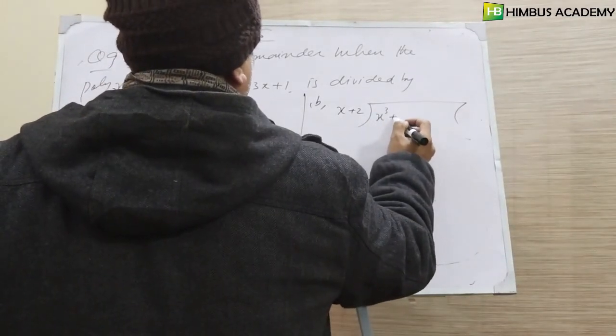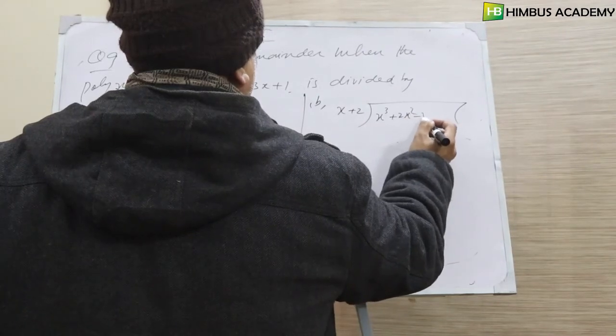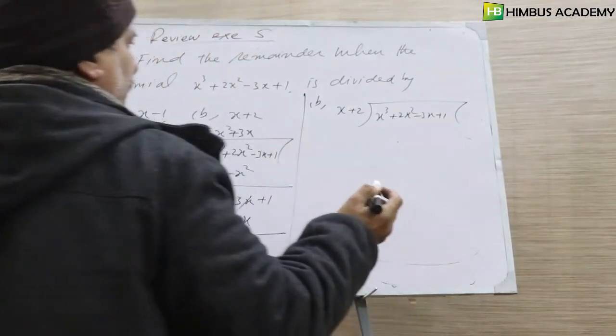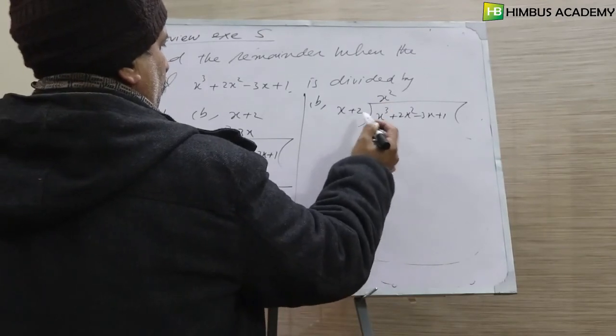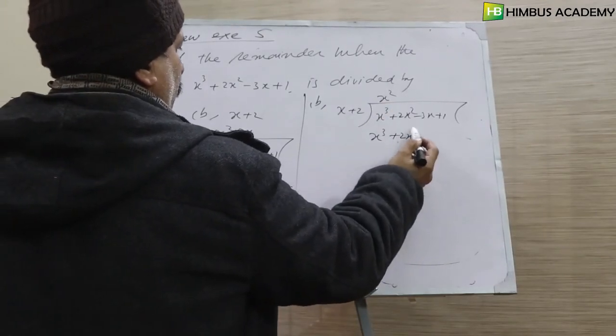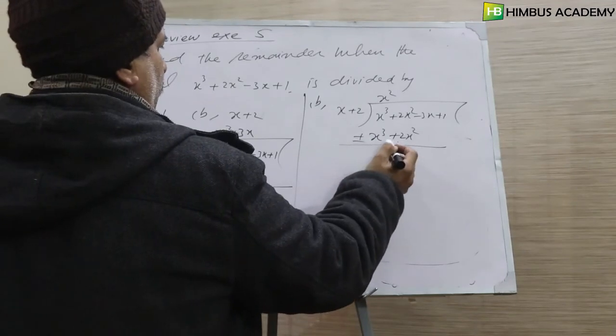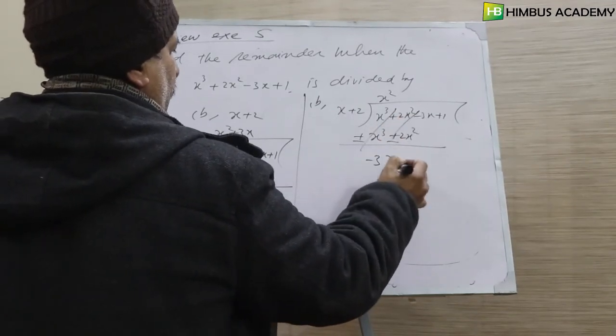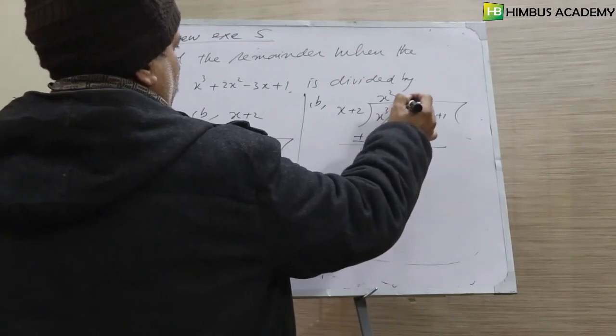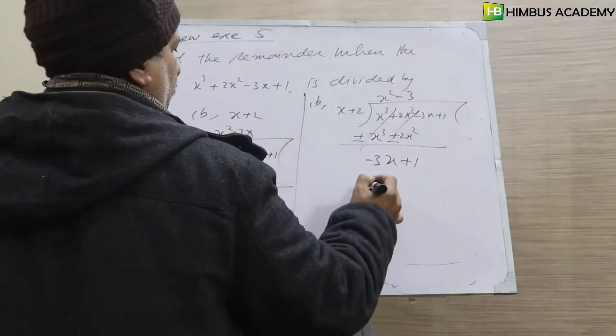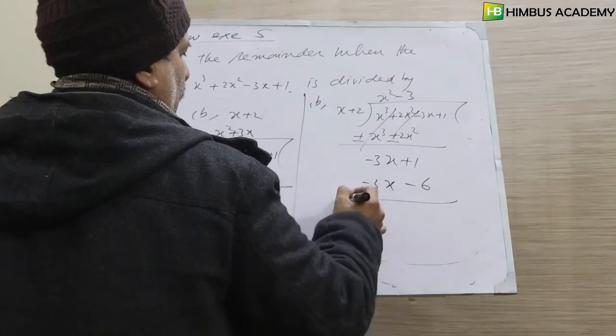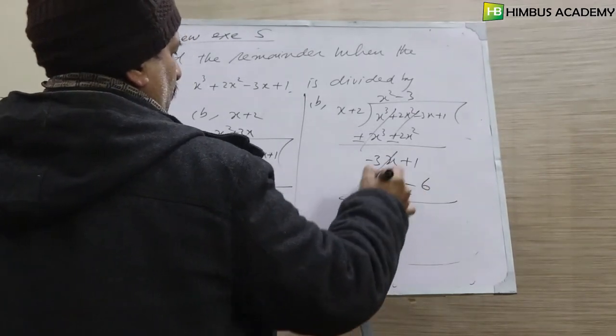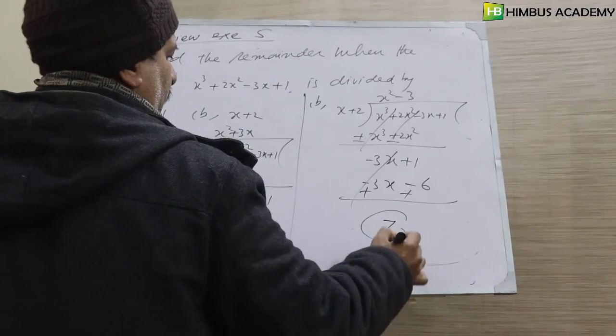We have x³ + 2x² - 3x + 1. This is x², so x³... 2x² plus minus cancel, minus 3x plus 1. This is minus 3, minus 3x and this is minus 6. Here we have a remainder of 7.